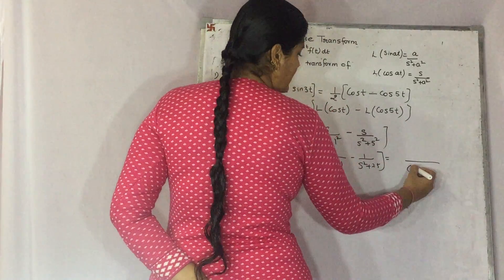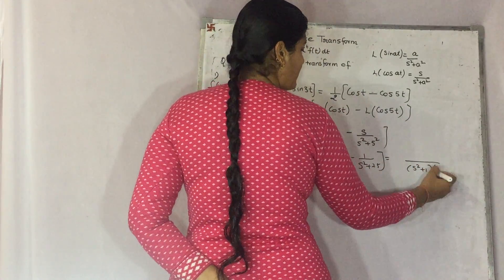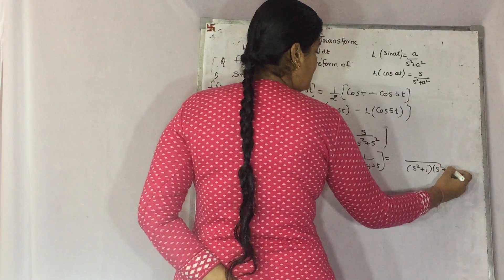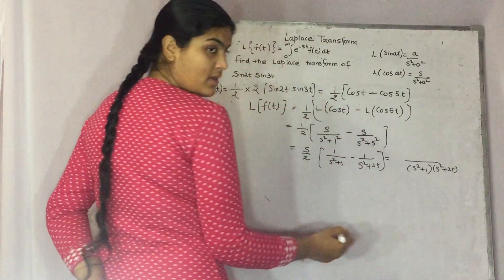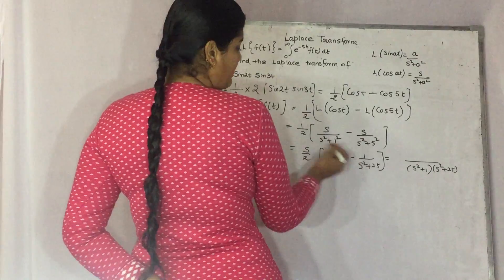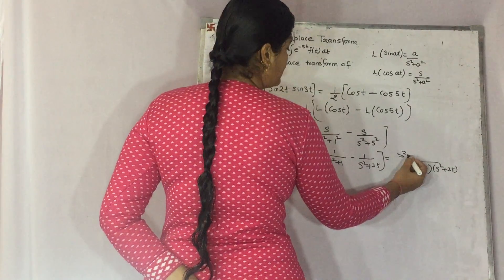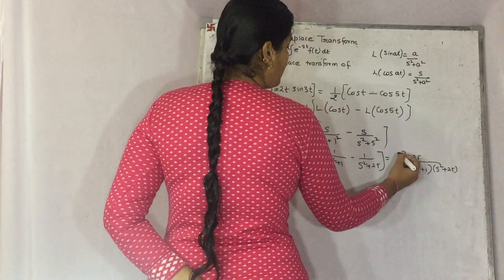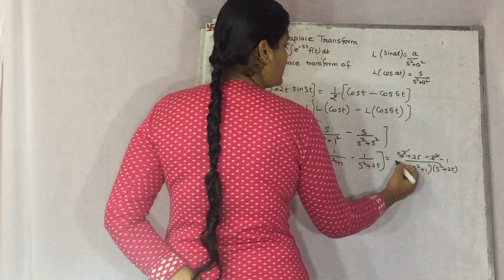And in this way, if you solve it, then this is your answer. This will come out as s multiplied by s square plus 25 minus s square minus 1. s square is cancelled, and s square plus 25.